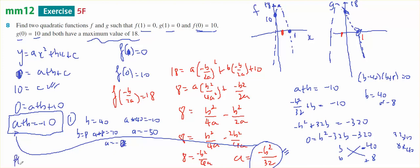So one can be f of x equals negative 50x squared plus 40x plus 10. And g of x can equal negative 2x squared minus 8x plus 10. So there are my two rules for f of x and g of x.